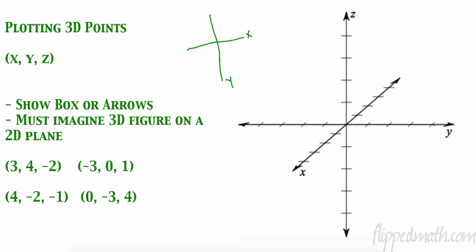Let's plot (-3, 0, 1). Negative three — I go backwards on my x. Zero on my y means I don't go over at all. Then up one on my z. Notice this one is not really three-dimensional because the y is zero, so the point sits right here on the x-z plane. That's the box method.